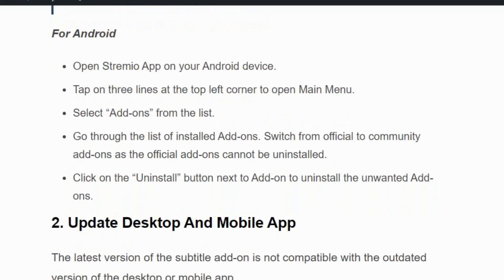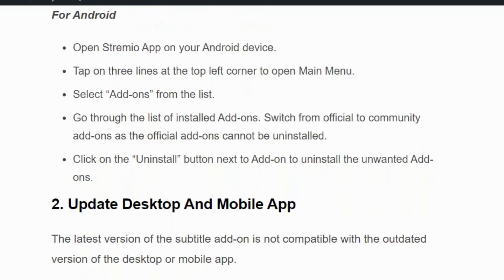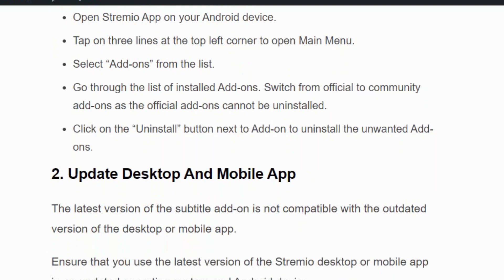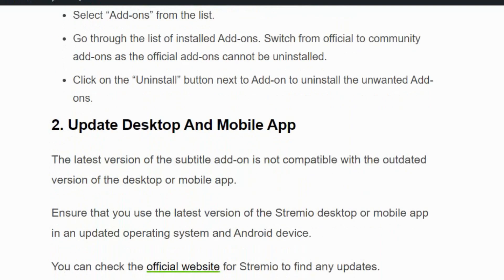Go through the list and uninstall the add-ons which are not required. Now go back to Streamivo and watch a video with subtitles to see if it is working fine. If not, then move to solution number two.